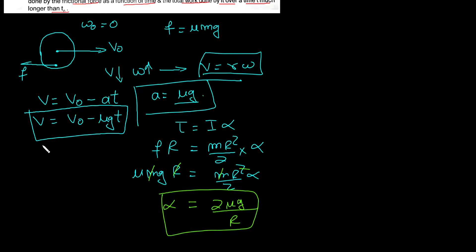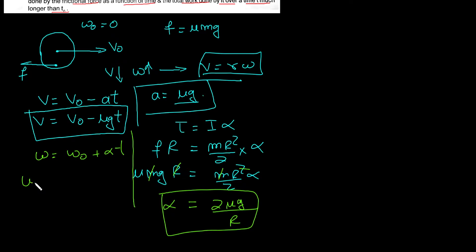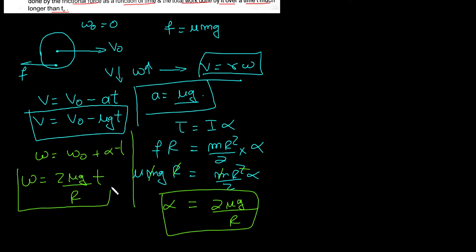Now we use the rotational equation of motion: ω = ω₀ + α·t. Here ω₀ = 0, so substituting α we get ω = (2μg/r)·t.